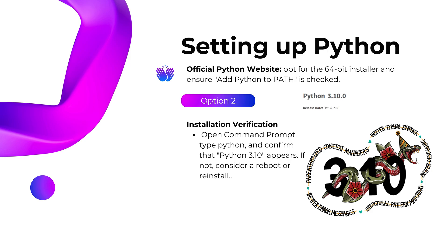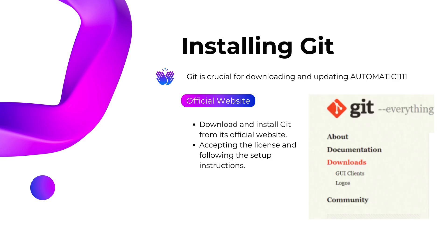Next, we need Git. It's essential for downloading and keeping AUTOMATIC1111 up to date. Head over to the official Git website, download it, and follow the simple setup steps.